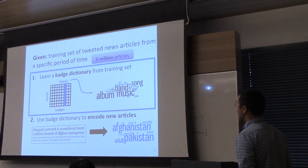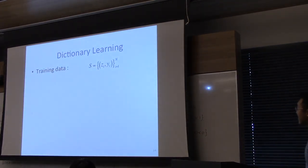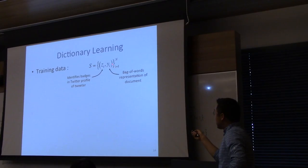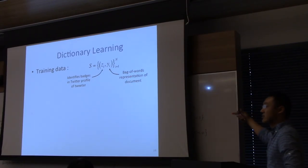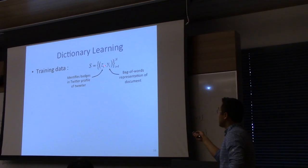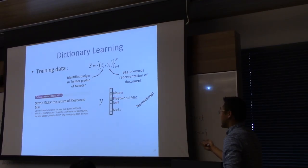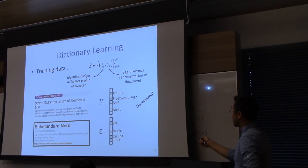Step one of this two-part procedure is to learn a badge dictionary from the training set. Each entry of the training set is a tweeted article. Y is the bag-of-words representation of a document, which may be tweeted multiple times by multiple people — you typically want to normalize this so counts sum to one. Z corresponds to the Twitter user that tweeted this article, and it's an indicator vector of which badges are active for that user.